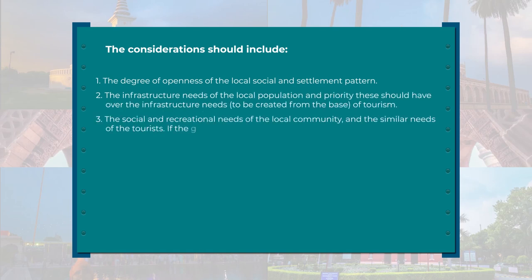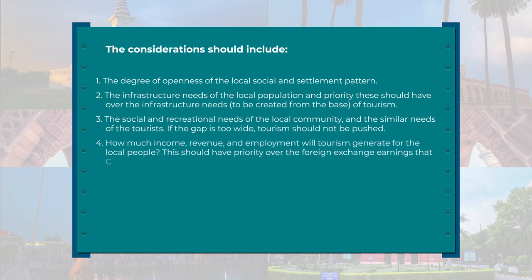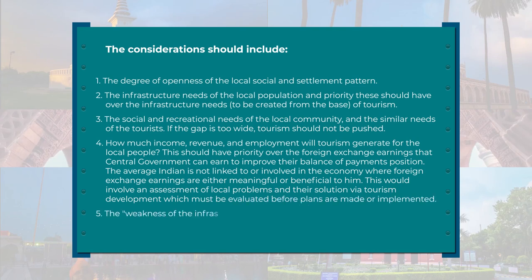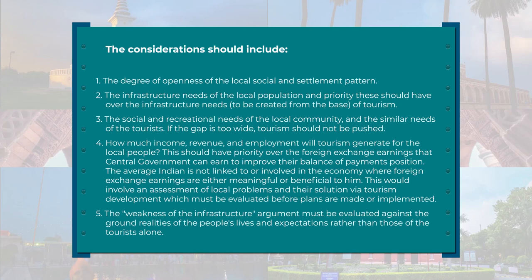These considerations should include: the degree of openness to the local social and settlement patterns; the infrastructure needs of the local population — which should have priority over infrastructure created purely for tourism; the social and recreational needs of the local community compared to similar needs of the tourists. If the gap is too wide, tourism should not be pushed. How much income, revenue, and employment will tourism generate for the local people? This should have priority over the foreign exchange earnings that the central government can earn. The average Indian is not linked to or involved in an economy where foreign exchange earnings are meaningful or beneficial to him.